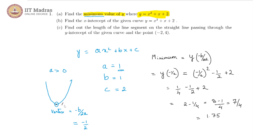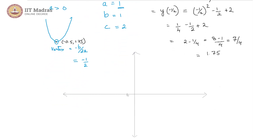So this vertex point is now known to be minus 0.5 comma 1.75. They are also asking us for the x-intercept. We observe that the vertex is at minus 0.5 on the x-axis and 1.75 on the y-axis. Since this is an upward parabola with its minimum at y equals 1.75, the parabola never touches the x-axis at all. There is no x-intercept for this parabola.